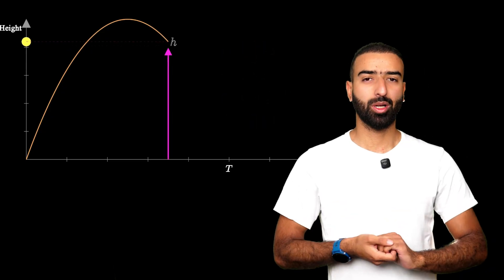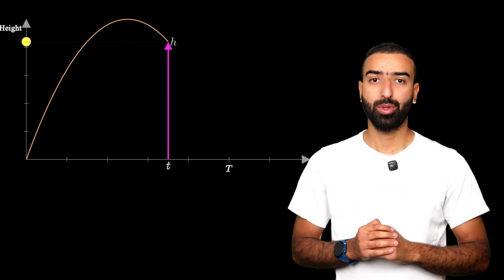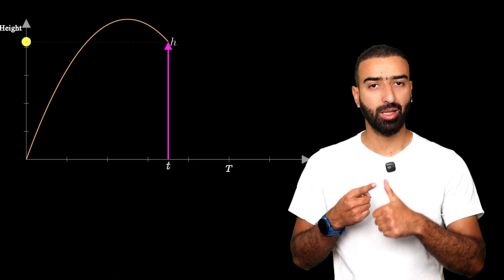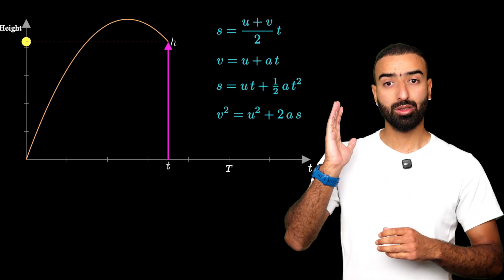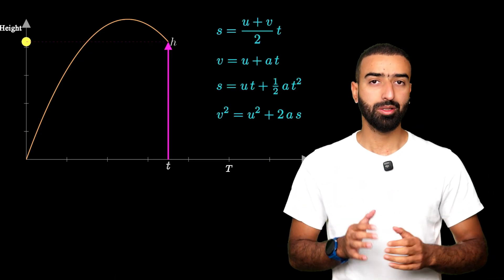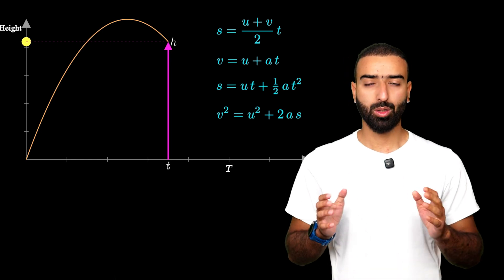Alright, let's try this problem together. We are interested in finding the displacement at time T. And these are the SUAT equations that you'll find in your data booklet. But which equation should we choose?